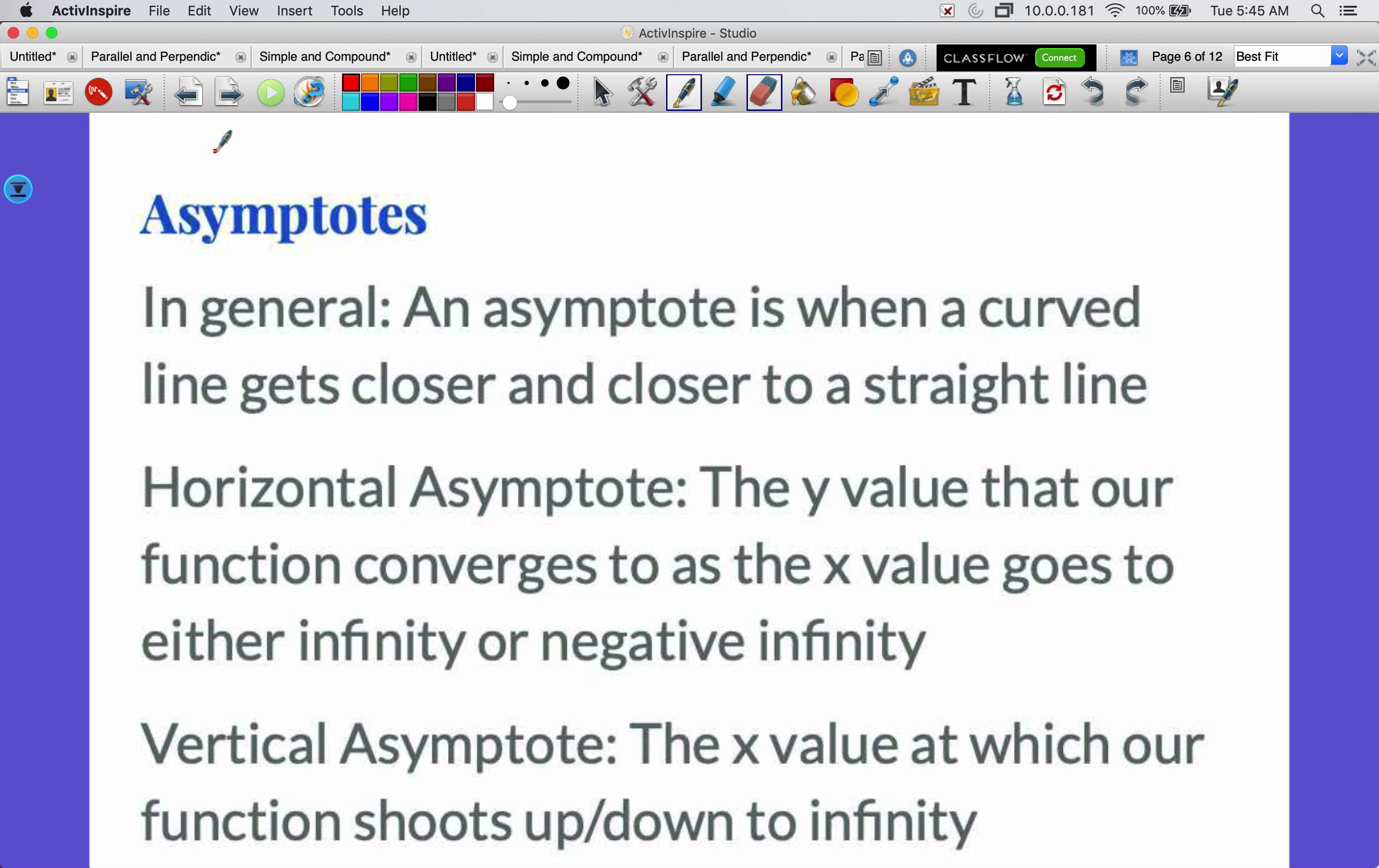Let's talk a little bit more about asymptotes. So in general, an asymptote is when a curved line gets closer and closer to a straight line. We've seen it in a couple different graphs now. Exponential growth, exponential decay, those both have horizontal asymptotes. And a horizontal asymptote is specifically the y value that our function converges to as the x value goes to either infinity or negative infinity. And a vertical asymptote, we've seen those now with our logarithmic graphs, that's an x value at which our function shoots up or down to infinity. So horizontal is a y value, vertical is an x value. Take some notes on that, please.